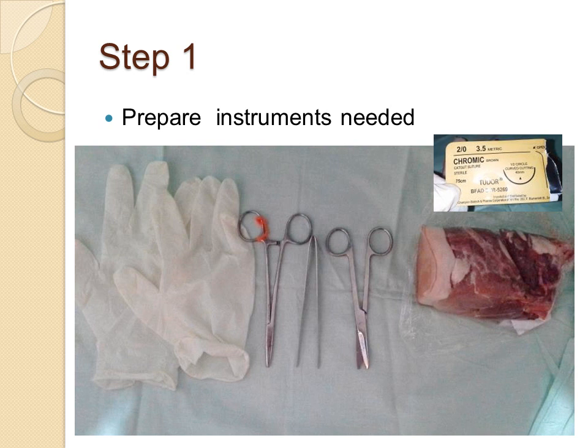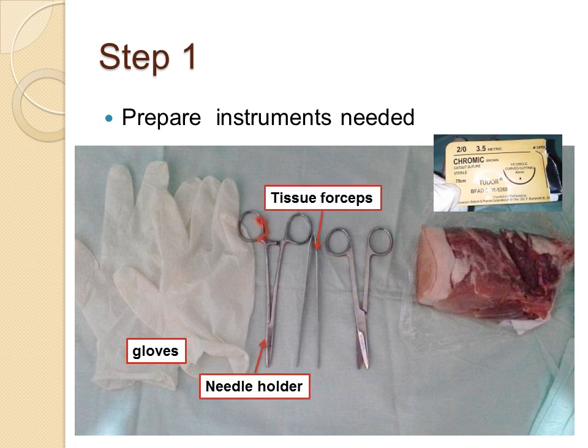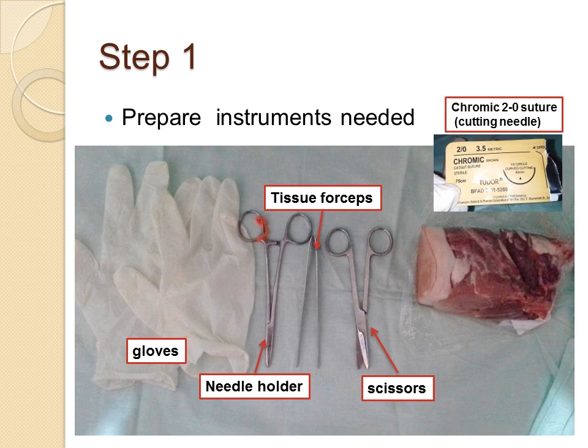As shown in this picture, we have the gloves, needle holder, tissue forceps, a pair of scissors, and of course the suture. We prefer Chromic 2-O suture with a cutting needle. For this video tutorial, we will not showcase a live actual patient, but instead we will use a block of meat to practice our episiotomy repair.